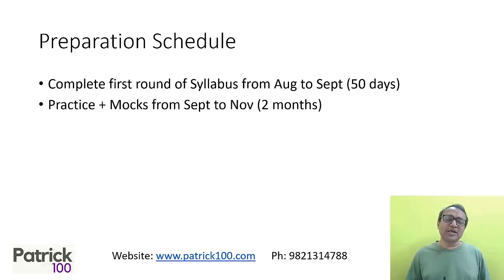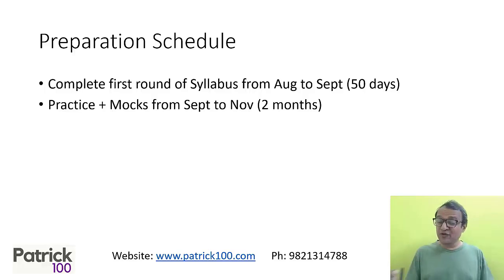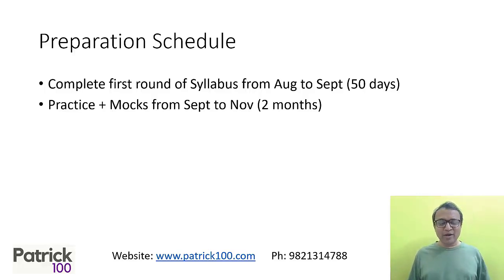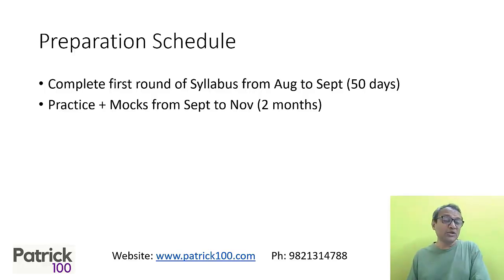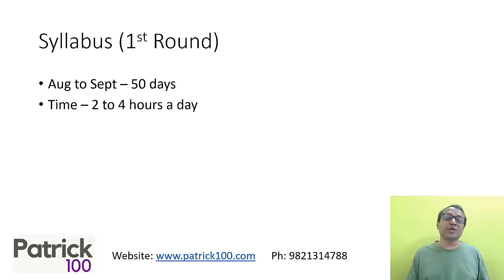The preparation schedule: the whole idea is to complete your syllabus in 50 days time, so you have 2 months for practice and mocks. 4 months is ample time to prepare for CAT. You have enough time to practice while you plan properly. The first round — August to September, 50 days — you complete your syllabus.